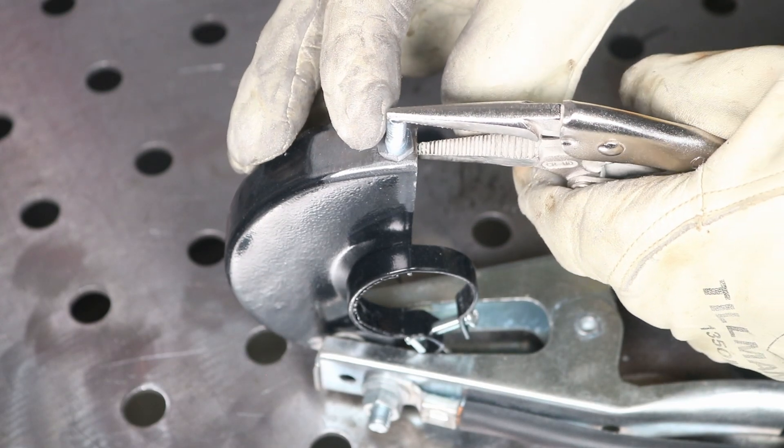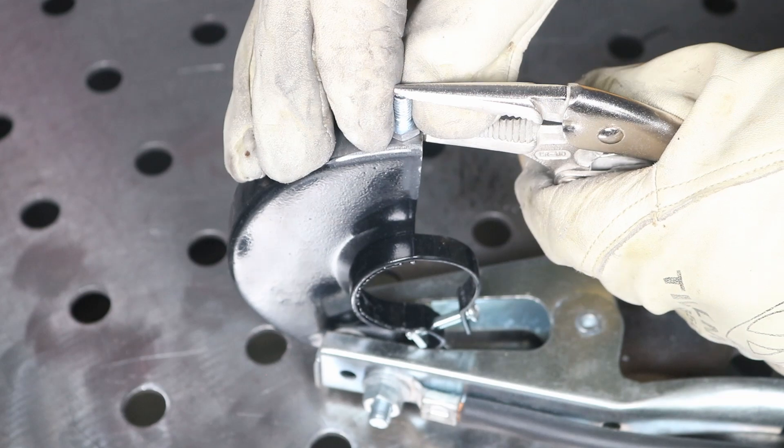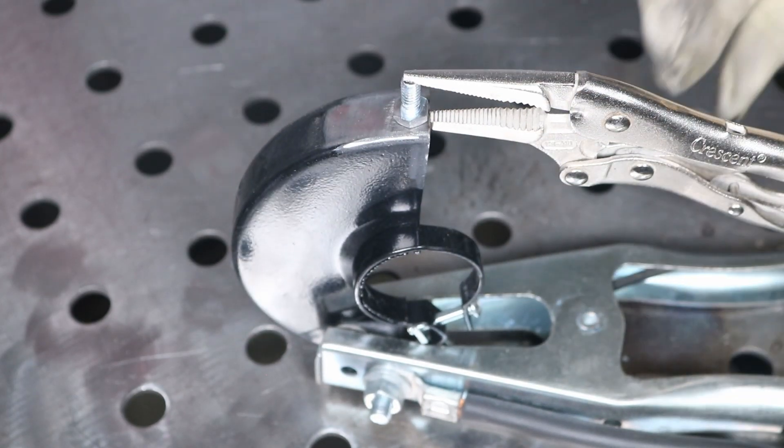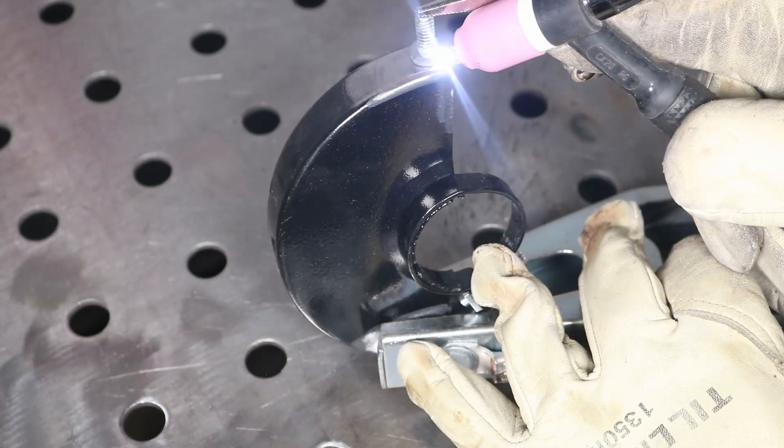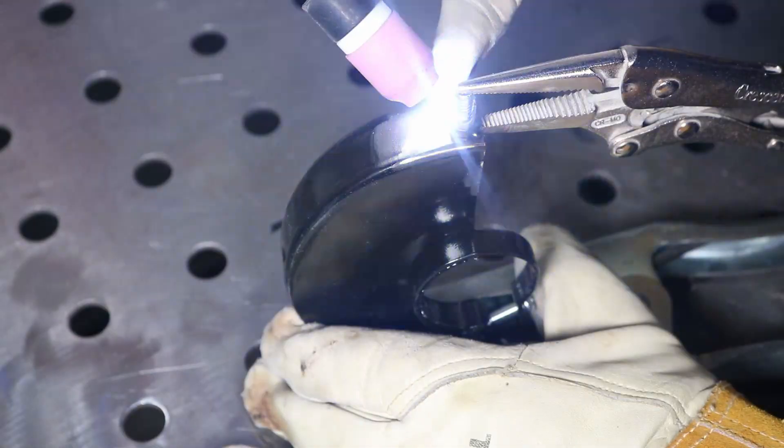Now I ground most of the zinc coating off of the head of this screw so that wouldn't be down in our weld to make things go a little better and be a little safer. So I'm just going to TIG weld this. I'll throw a few tacks on here in three places to hold it in place and then weld all the way around.